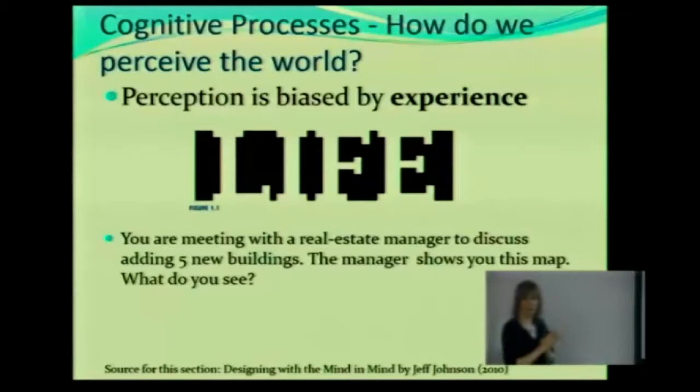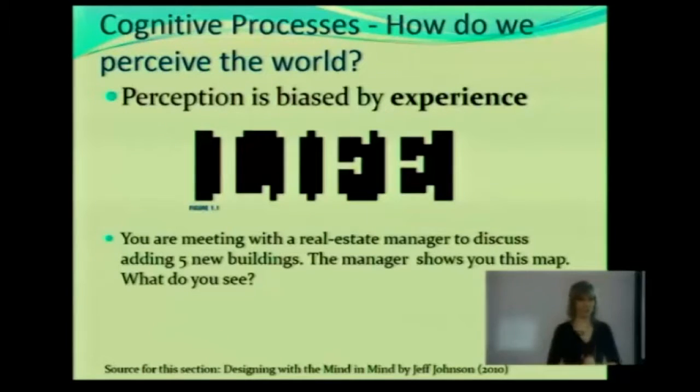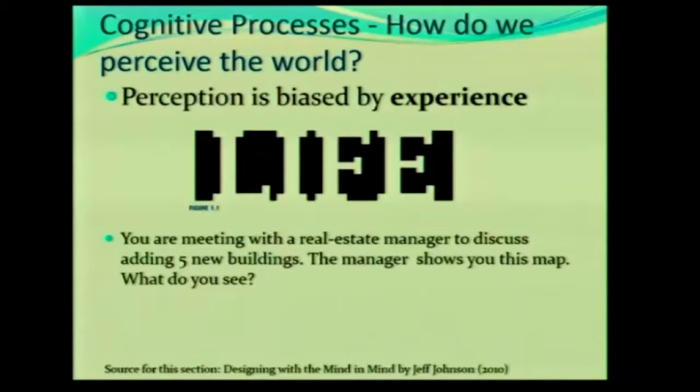So let's go through a couple of things that's going to really illustrate some of what I'm talking about. One of the things we need to remember is that when I talk about cognitive processes and I talk about all of these things and how we process information, it really is influenced by various things in the environment and within ourselves. So one of the things that we find is that our perception, how we perceive things, is biased by experience. So I'm going to give you a little scenario.